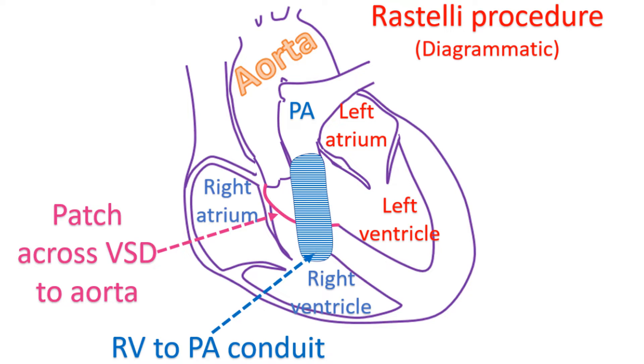The ventricular septal defect is widened and the infundibular septum is resected, followed by baffling of the left ventricle to the aorta.